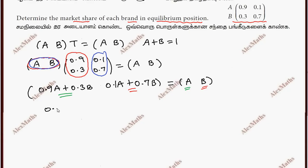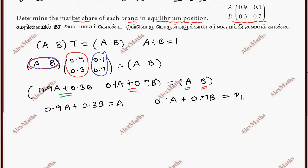Equating corresponding elements: 0.9A plus 0.3B equals A — this is Equation 1. And 0.1A plus 0.7B equals B — this is Equation 2. We also have A plus B equals 1.